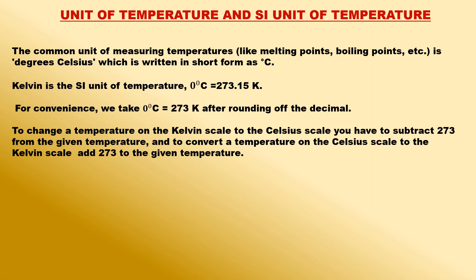The common unit of temperature and SI unit of temperature: we use the Celsius scale of temperature for measuring temperatures in our everyday life. So the common unit of measuring temperatures like melting points, boiling points, etc. is degrees Celsius. The melting point of ice on the Celsius scale is 0 degrees Celsius, and the boiling point of water on the Celsius scale is 100 degrees Celsius.